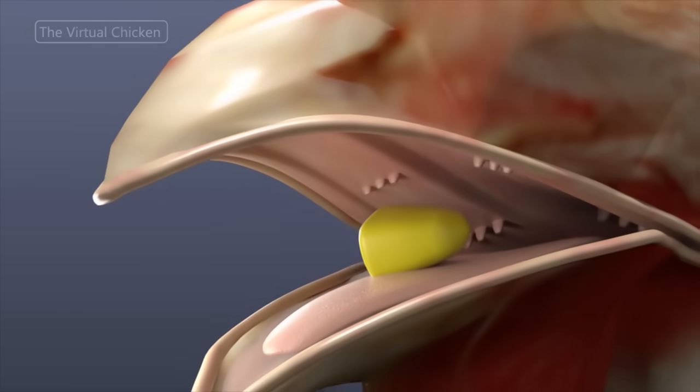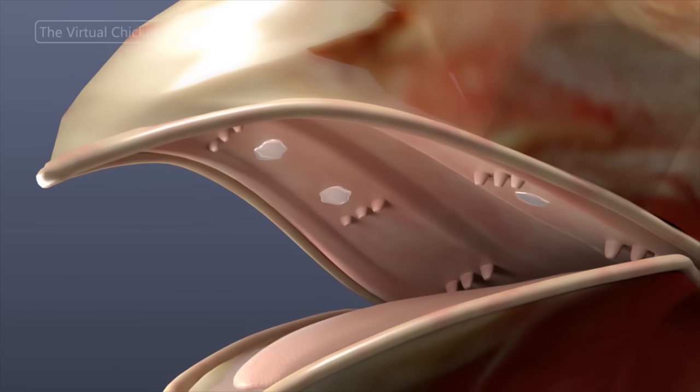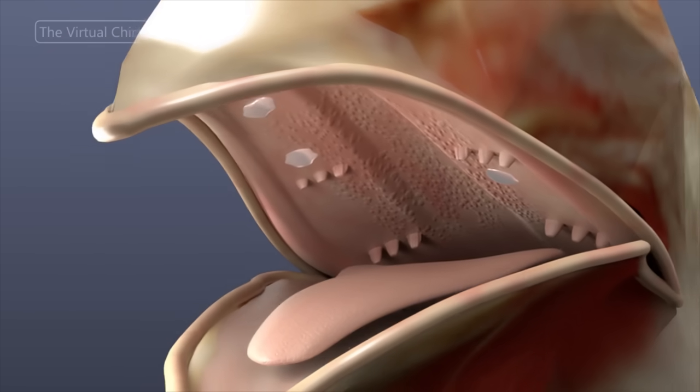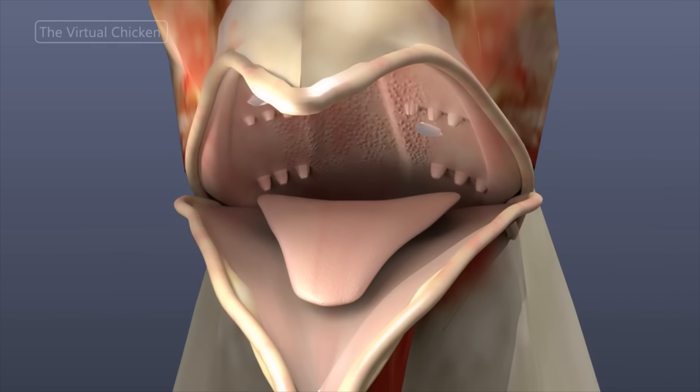Salivary glands are less developed in birds, but are present at the roof of the mouth. They secrete mucus, which lubricates the food and allows it to move down the esophagus. Taste buds are located in the upper beak and are also in small numbers on the anterior of the tongue. Chickens have up to 300 taste buds.